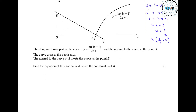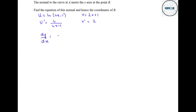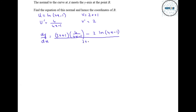To find the equation of the normal we differentiate y equals ln((4x minus 1)/(2x plus 1)) using the quotient rule. Setting u equals ln(4x minus 1) and v equals 2x plus 1, we get u' equals 4/(4x minus 1) and v' equals 2. So dy/dx equals [v·u' minus u·v'] / v², which gives [(2x+1)·4/(4x−1) minus 2·ln(4x−1)] divided by (2x+1)².